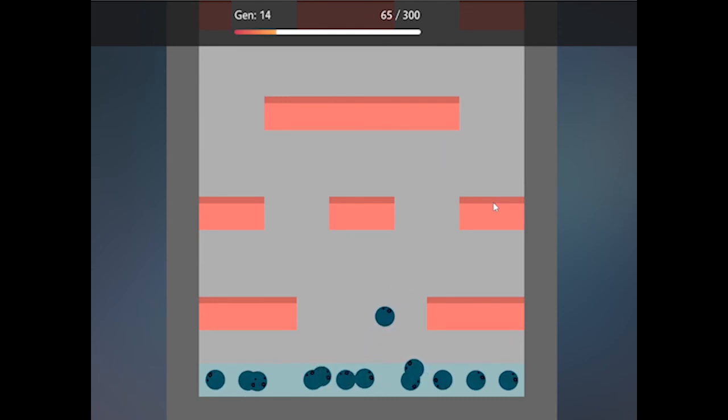Once you have your second batch of neural nets, you repeat the process, reward the ones that achieve anything, and continue generation after generation after generation.